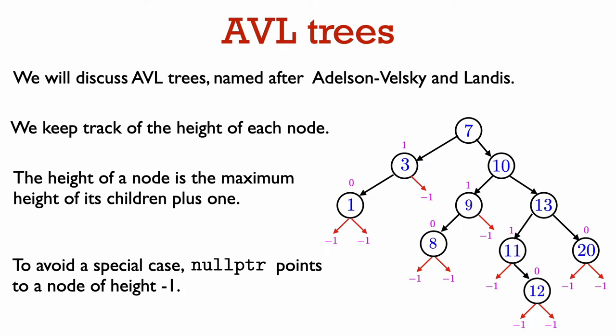Now we can compute the next level of heights. All these nodes have height one, and we have one node at height two there. This node has height three because its left child has height one and its right child has height two. And finally, the root has height four, which is one plus the maximum of the height of its left child, which is one, and the height of its right child, which is three.